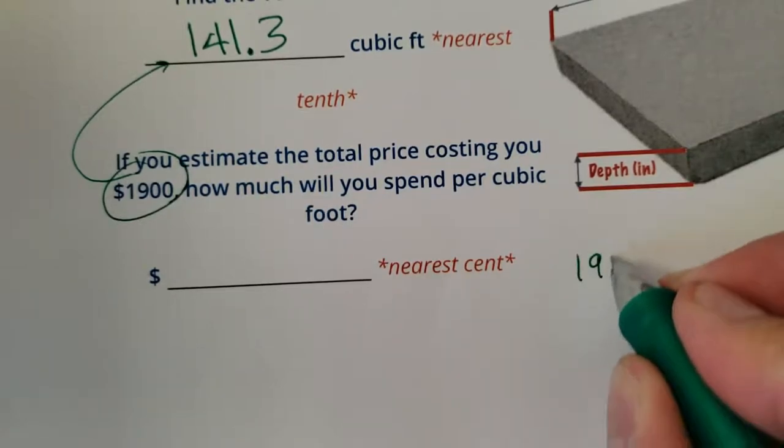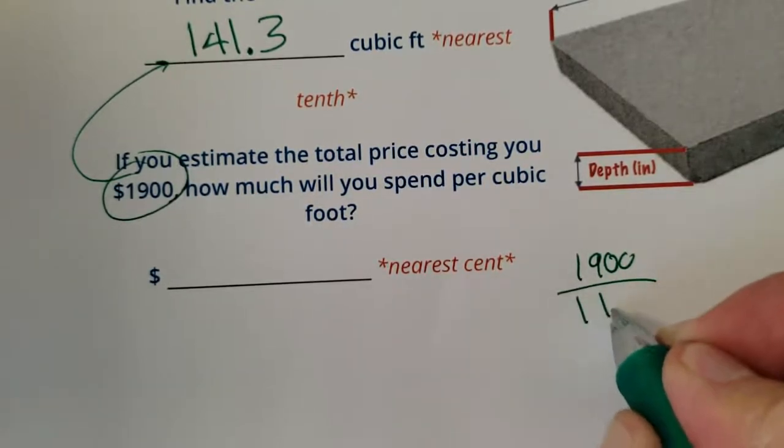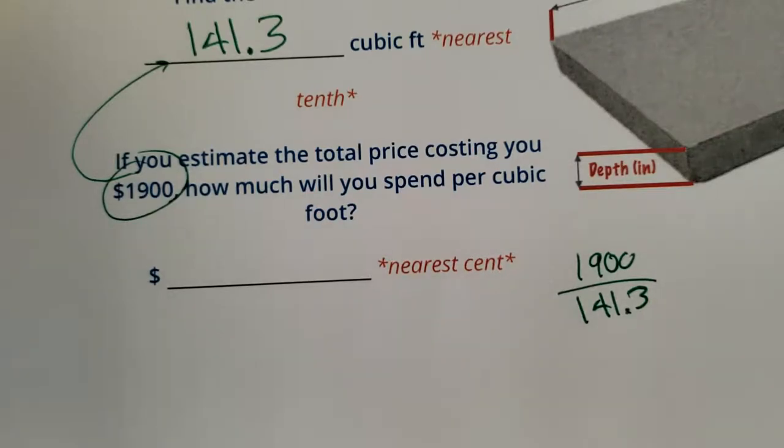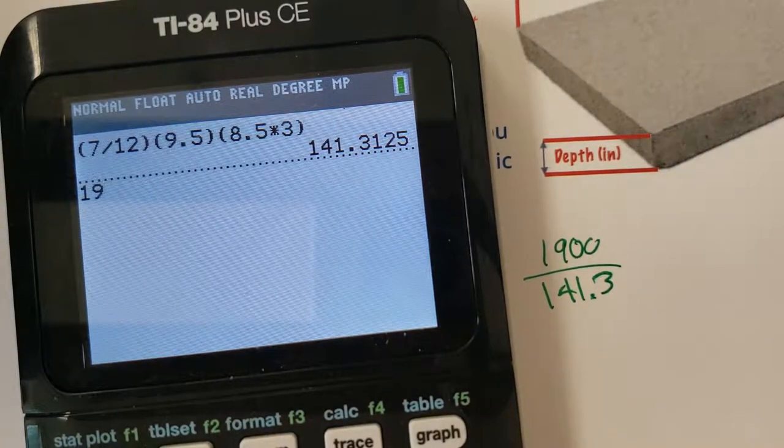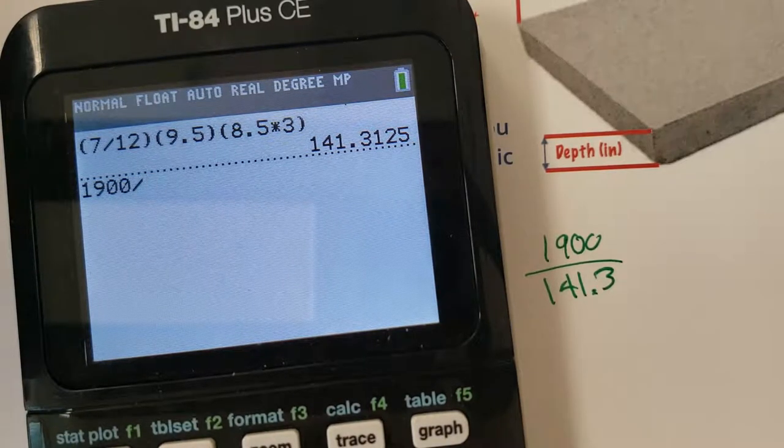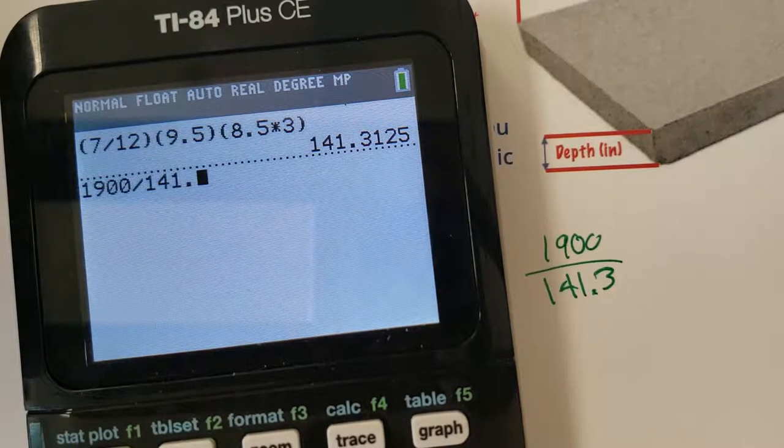It's going to cost me $1,900. I divide by 141.3. We can figure out how much one cubic foot cost you to the nearest cent. 1,900 divided by 141.3125.